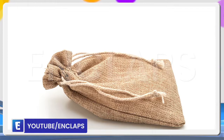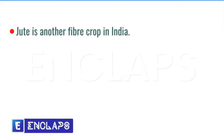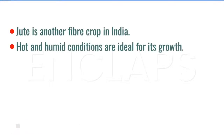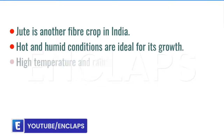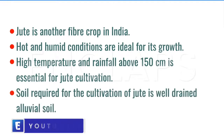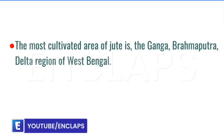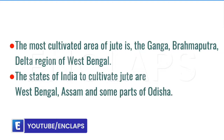The other fiber crop is jute. We discuss about jute production, jute farming and jute industries. Hot and humid conditions are ideal for its growth. High temperature and rainfall of about 150 centimeters is essential for jute cultivation. Soil required for jute cultivation is well-drained alluvial soil. The most cultivated area of jute is the Ganga-Brahmaputra delta regions of West Bengal. The states of India that cultivate jute are West Bengal, Assam and some parts of Odisha.